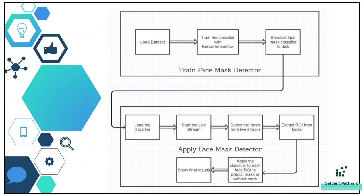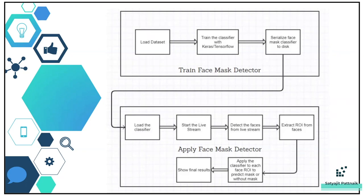In this tutorial we will be discussing two different phases. Phase one is the training part: loading datasets, training the classifier with Keras or TensorFlow, and then serializing the face mask classifier to disk. If you are not aware of how image-related classifiers work, I have already given a session on CNN in my channel where you can understand the basics of CNN, how convolution works, how pooling works, and how flattening works.